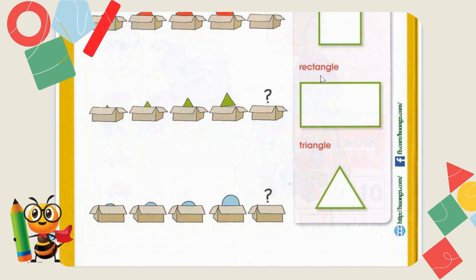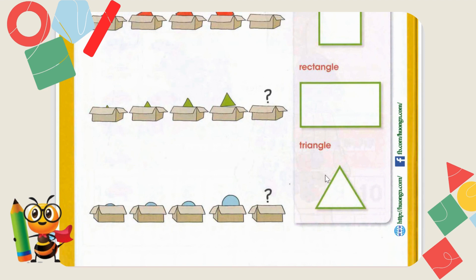Coming up to the last shape: triangle — T-R-I-A-N-G-L-E. What does triangle mean? 'Tri' means three. So how many sides will a triangle have? Three. Let's count: one, two, three. This shape is known as triangle. Tri means three, and a triangle has three sides. How many corners does it have? One, two, three — three corners. So a triangle has three sides and three corners.